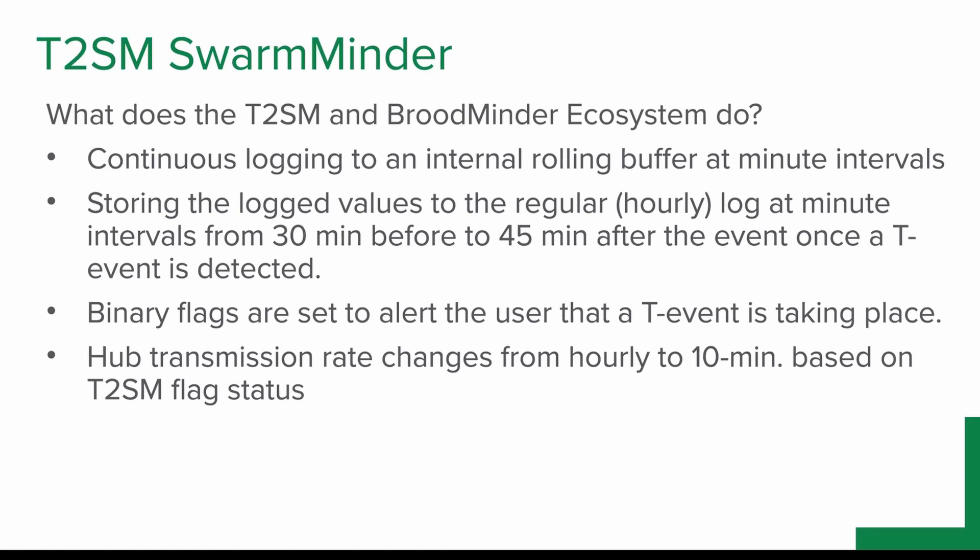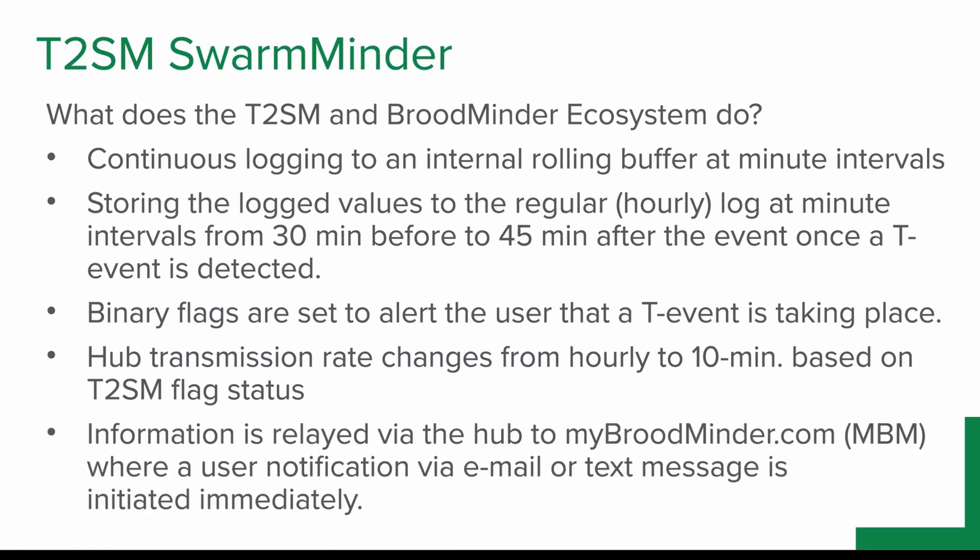We also changed the transmission rate of the hub, because it doesn't help if we have hourly logs and hourly transmission when we have a fast-paced event taking place. So we switch to 10-minute transmission once this flag in the T2 is set, and we relay either an email or text message notification to the user immediately.